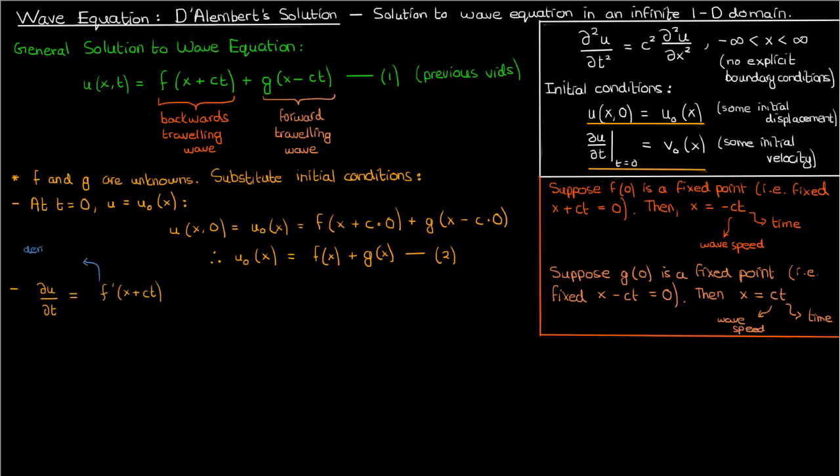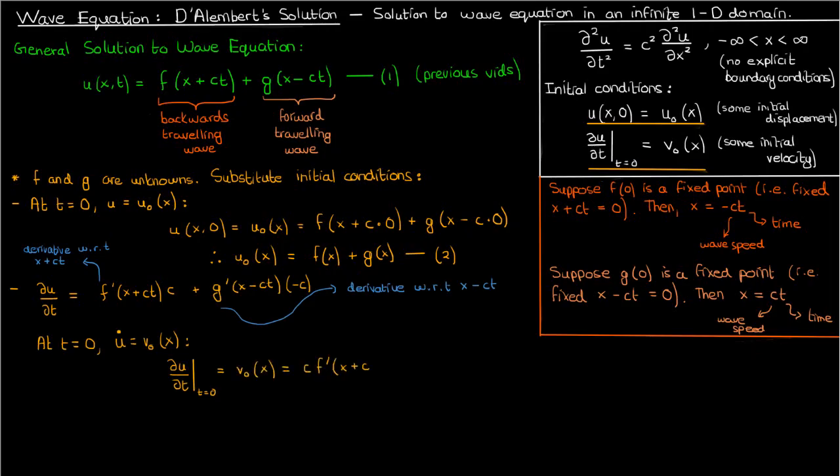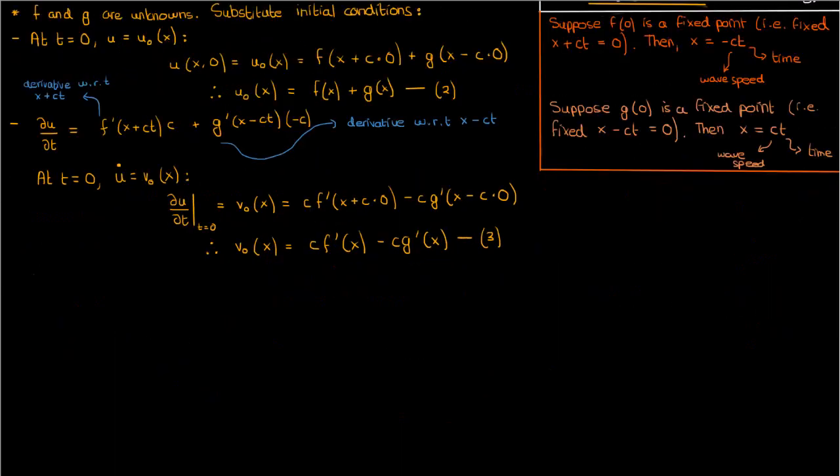We'll have the derivative of f with respect to x plus ct times the derivative of x plus ct with respect to t, which is just c. This is going to be added to the derivative of g with respect to x minus ct times the derivative of x minus ct with respect to t, and that's just negative c. Now we apply the second initial condition. At t equals 0, du dt is just v0 of x, which means that after simplifying, v0 of x is c times f prime x minus c times g prime x. This I'm going to call equation 3.